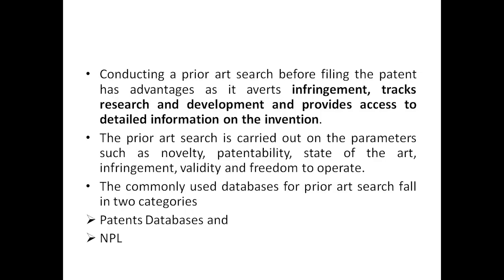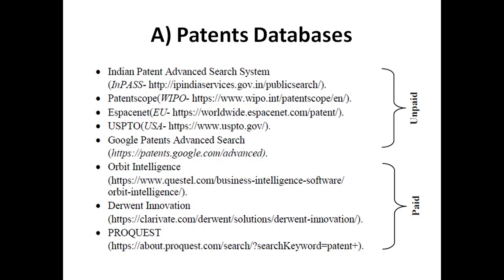The commonly used databases for prior art search fall into two categories: patent databases and non-patent literature. Patent databases come in two types — paid and unpaid. Unpaid examples include the Indian Patent Advanced Search System, PatentScope, IPAS, USPTO (the US Patent Office), and Google Patents. Paid versions include Orbit Intelligence, Derwent Innovation, and ProQuest. Their website links are given in the patent databases section. These patent databases will display any already-existing patent matching the title or device you are claiming.